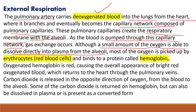The protein inside RBCs is called hemoglobin. Oxygen attaches to hemoglobin to form oxygenated hemoglobin. Oxygenated hemoglobin color is bright red, causing the overall appearance of bright red blood.